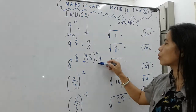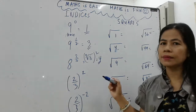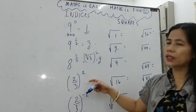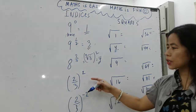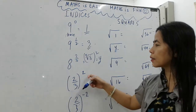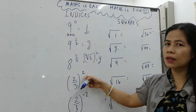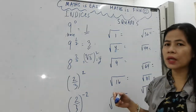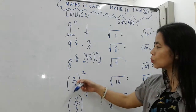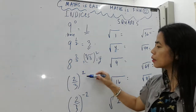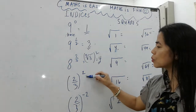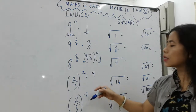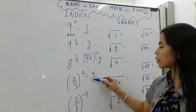Next, two over three as a fraction enclosed in a bracket with a square outside — it means both numerator and denominator are going to be squared. Two squared is two times two, which is four, and three squared is three times three, which is nine. Our answer is four over nine.